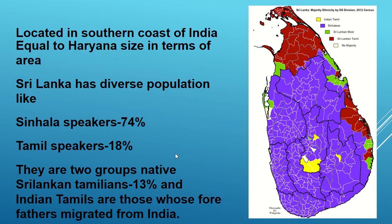The Sri Lankan Tamilians, shown in the brown border regions, are 13 percent, while Indian Tamilians are only 5 percent. You need to understand these statistics clearly, because going forward you will understand why there is a huge conflict due to the acts and constitutional amendments brought in by the Sri Lankan government.